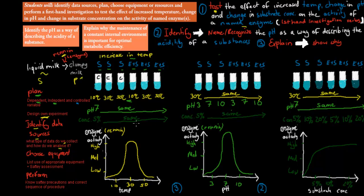With the temperature experiment, you would have seen not much change in the control test tubes because there's no enzyme. Whereas most of the clumpiness would have occurred in the one at about 30 degrees Celsius, with a bit of clumpiness at 10 degrees and a bit at 50 degrees. The graph produced would show your optimum temperature at about 30 degrees Celsius, and if you go on either side of that, the enzymes become denatured and work less effectively.